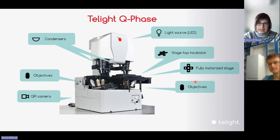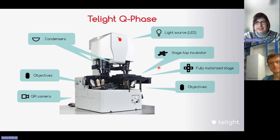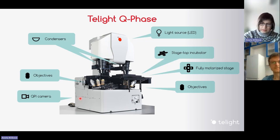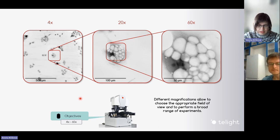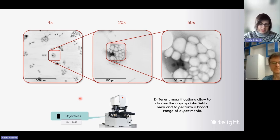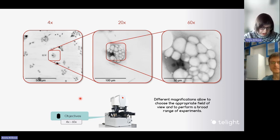The Q-Phase microscope is an inverted transmission microscope dedicated to living biological samples. It consists of an LED light source, condensers, a stage-top incubator for a proper environment for living cells, a fully motorized stage, sets of objectives, and a QPI camera. Q-Phase can be equipped with objective lenses of different magnification powers from 4x to 60x immersion lenses, allowing users to choose the appropriate field of view and perform a broad range of experiments.